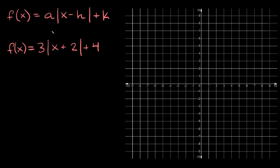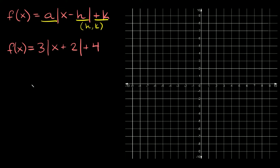Now I know this looks complicated, but there's literally only two things you need to know from this function. First of all, this number in the very front tells you the slope of your graph, and then h and k give you the vertex of your graph. So h and k — the vertex would be at h, k. The h is basically your x and the k is your y. Those are literally the only two things you need to know in order to graph an absolute value function. So let's start with the more complicated one and then we're going to do some easier ones so you see how they all actually tie in together.